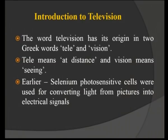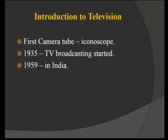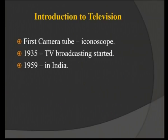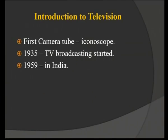In earlier days, selenium photosensitive cells were used for converting light from pictures into electrical signals — converting optical signals into electrical signals. It then evolved, and the first camera tube called the iconoscope came into picture, when photo selenium was used as a photosensitive material. After that the evolution started. The first camera tube, the iconoscope, is at the transmitter part — what we generally call a camera, where we capture the picture to be transmitted.